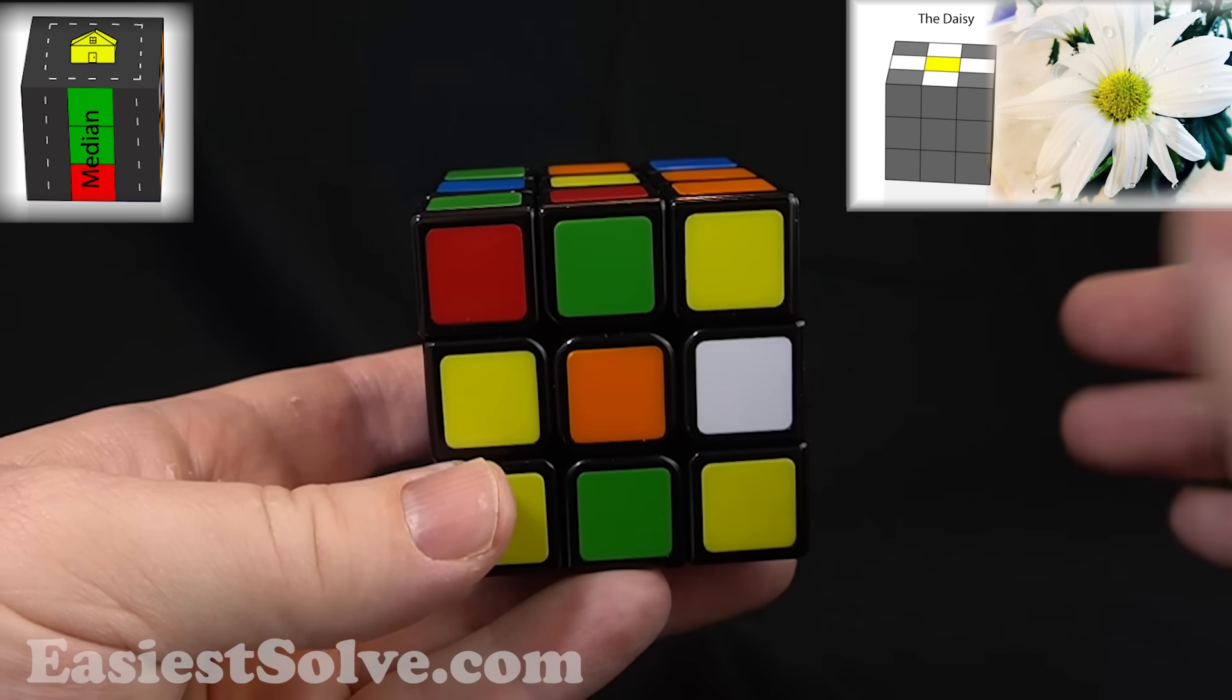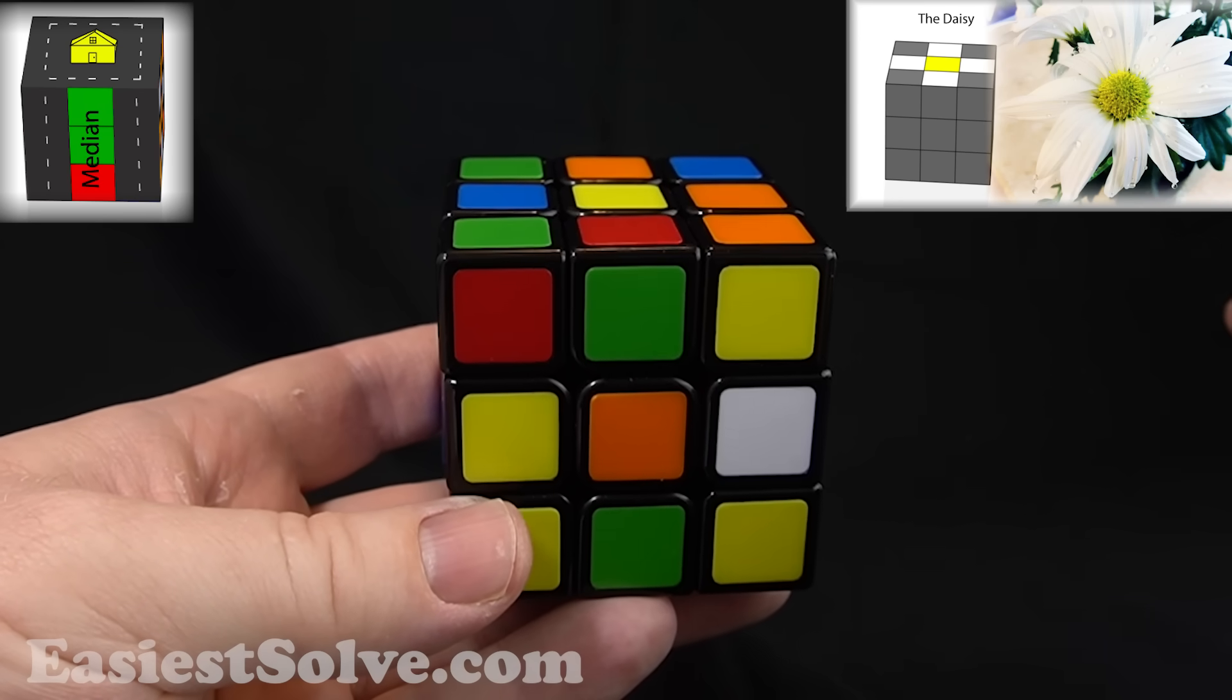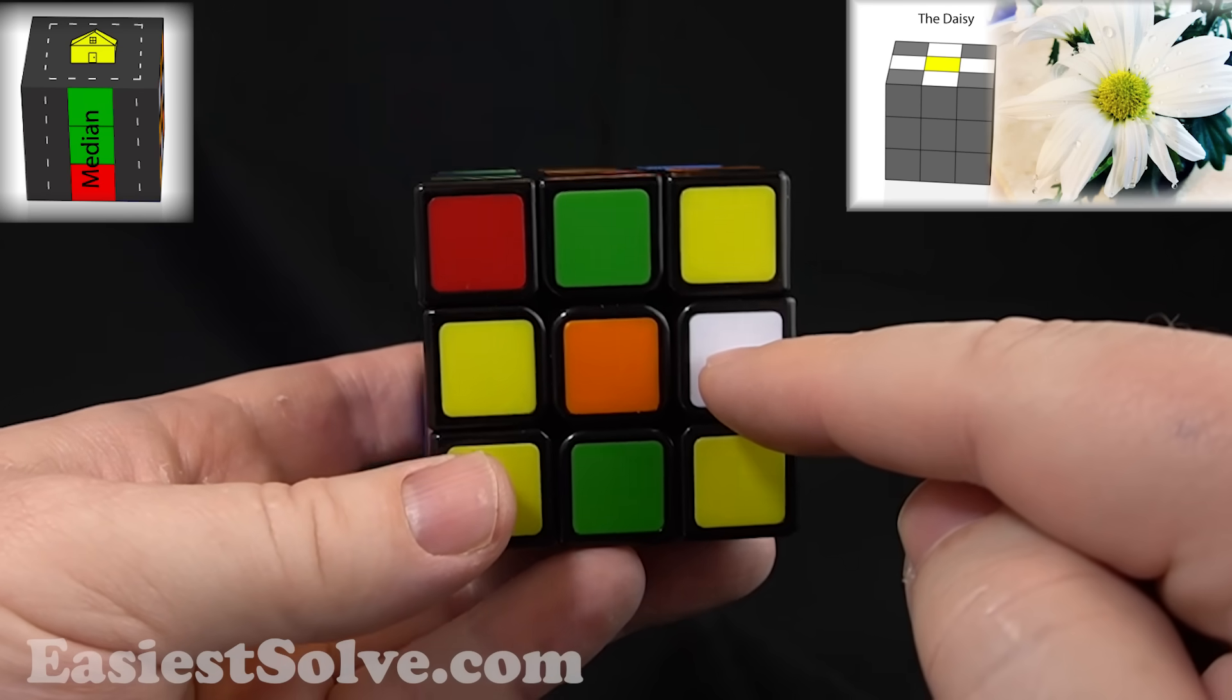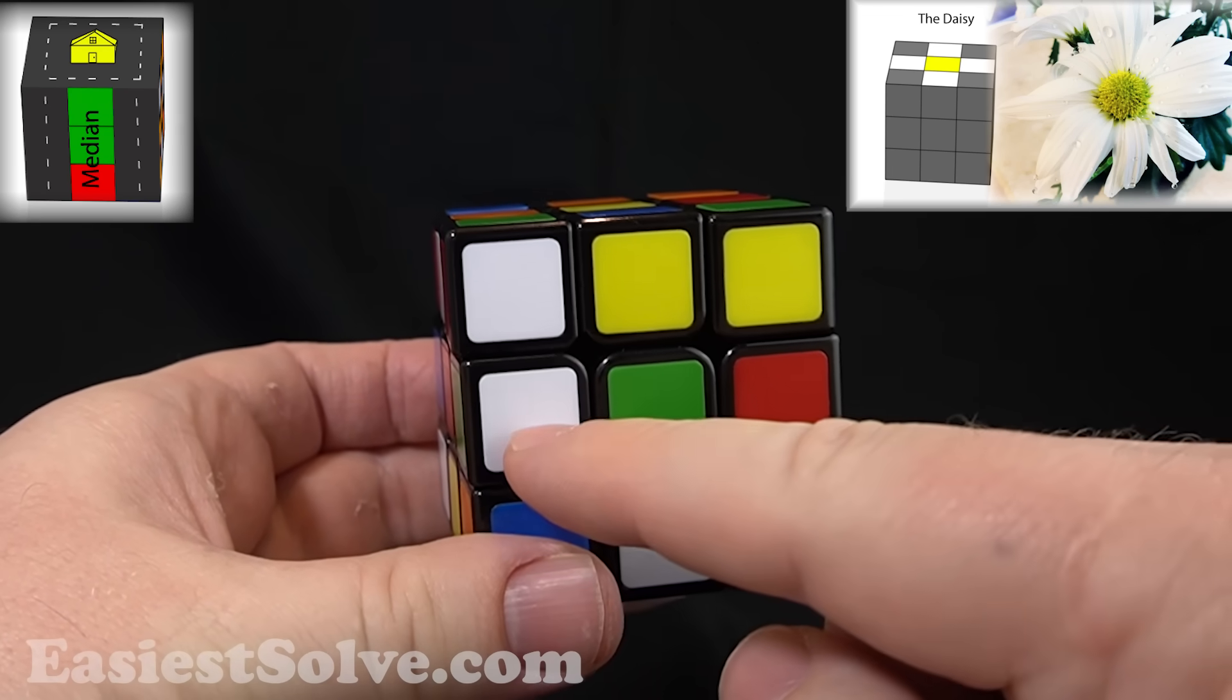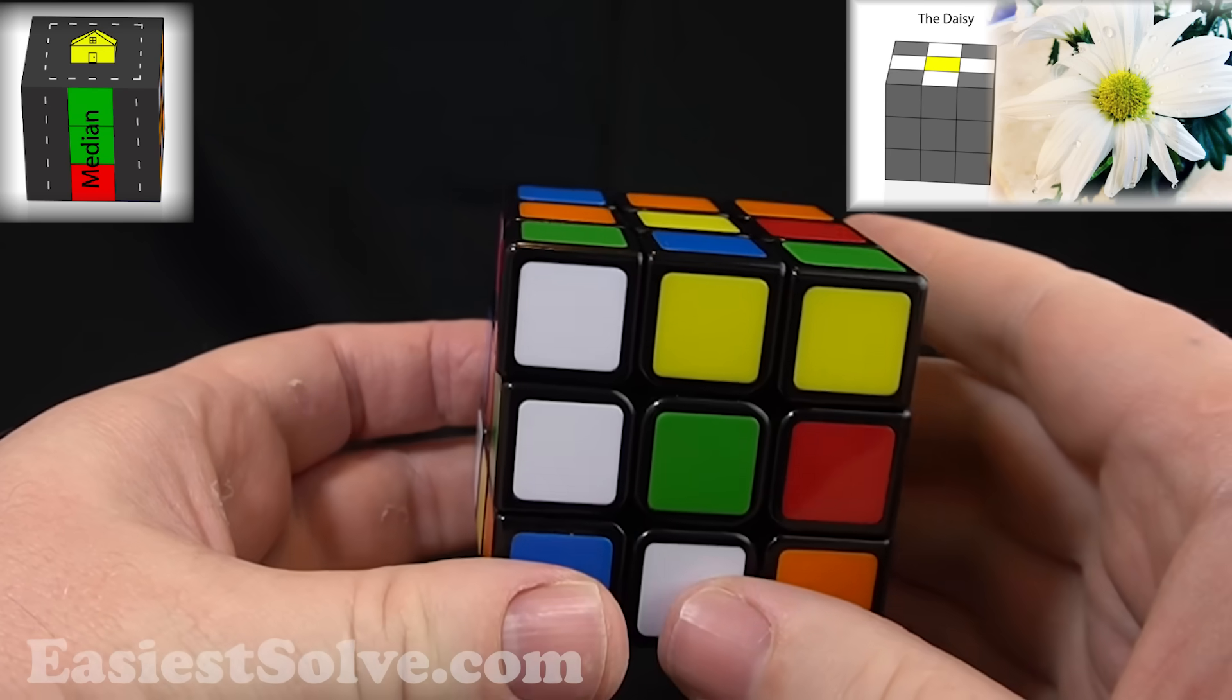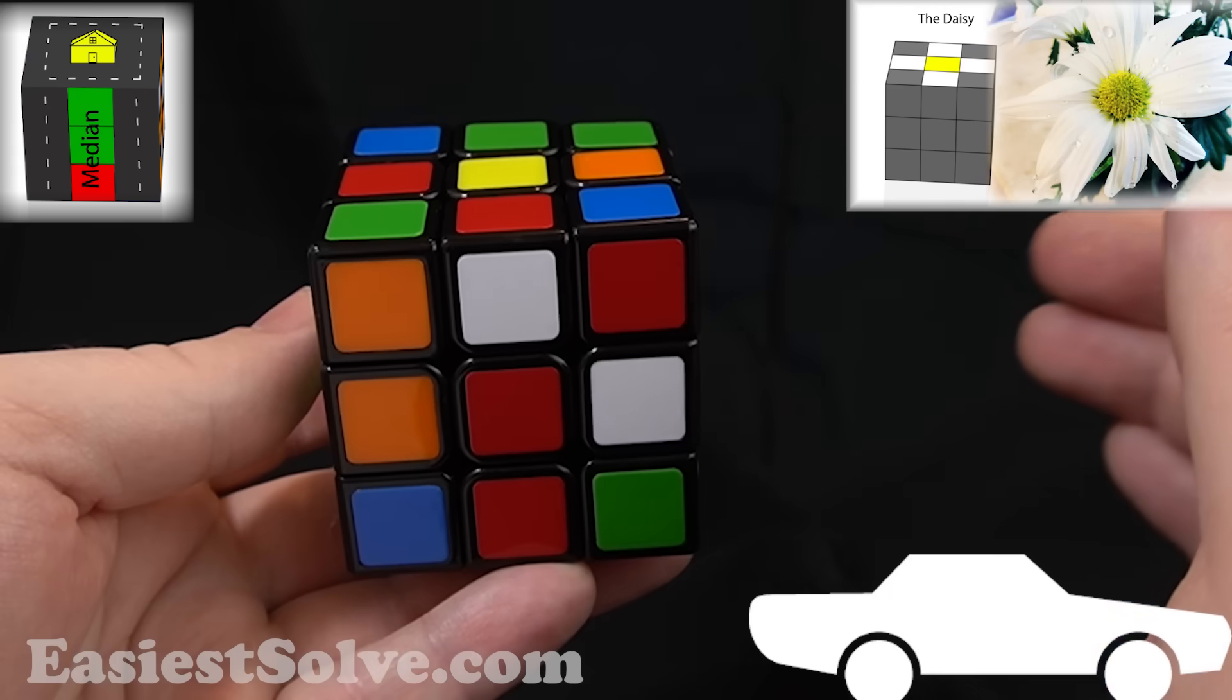So what are these cars? A car is a white square, as long as it's not a corner piece. This is a car, but if I turned over here, this is also a car. This is a car, but this one's not. Why? Because it is a corner piece. All right, so let's park the cars.